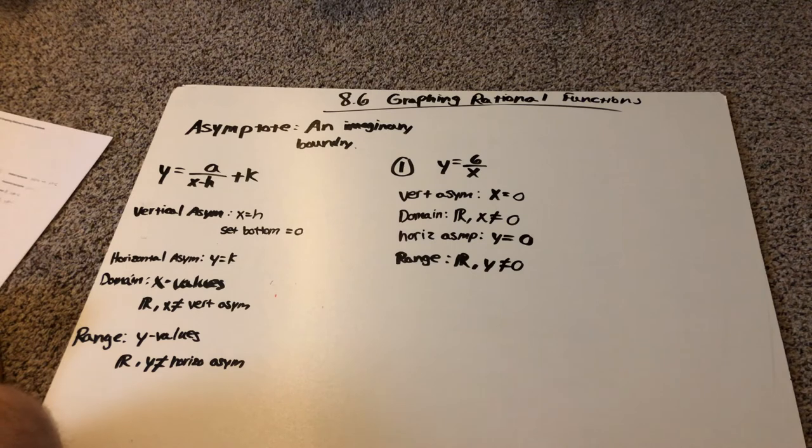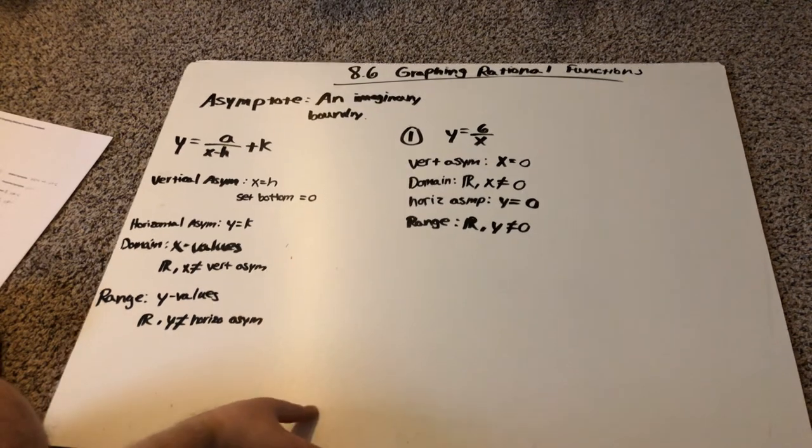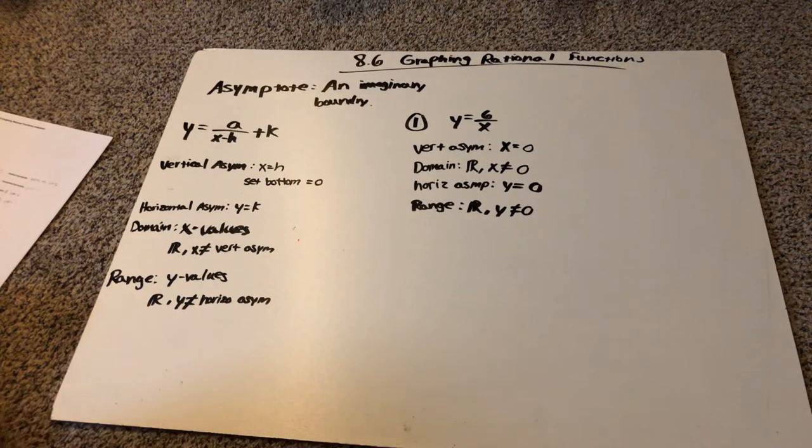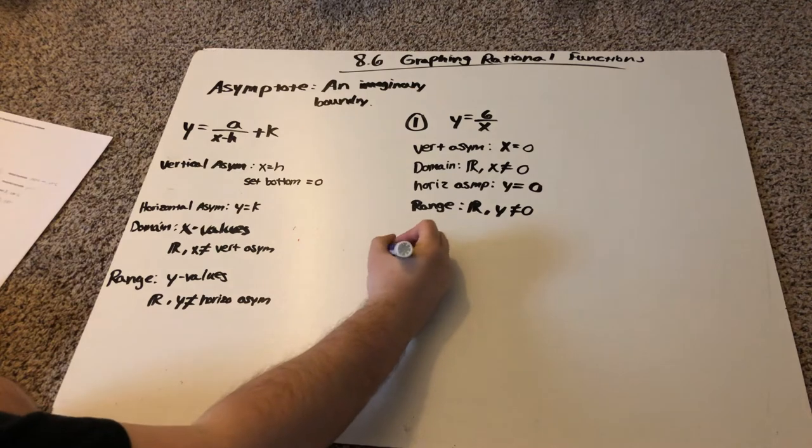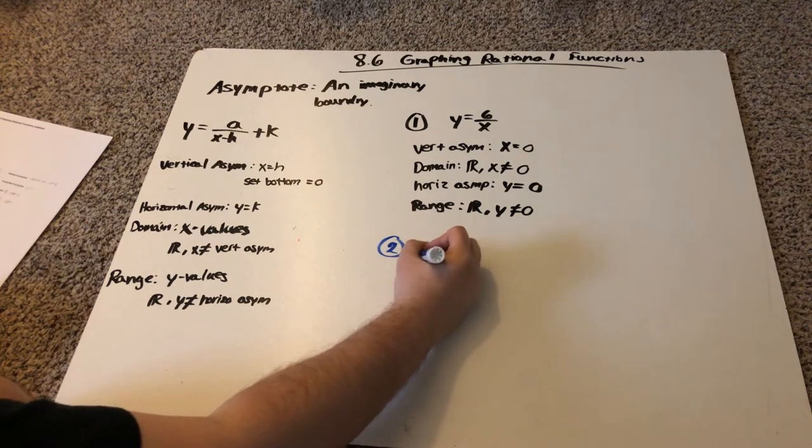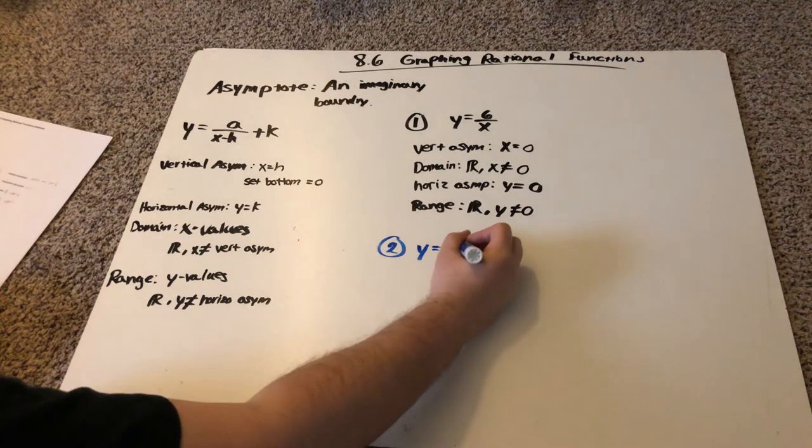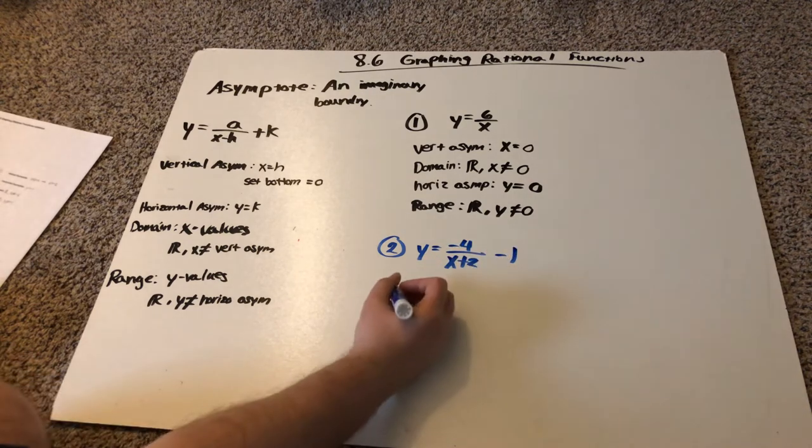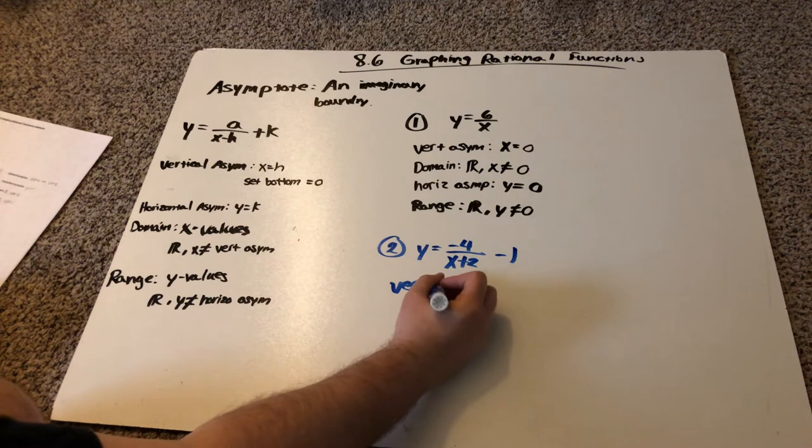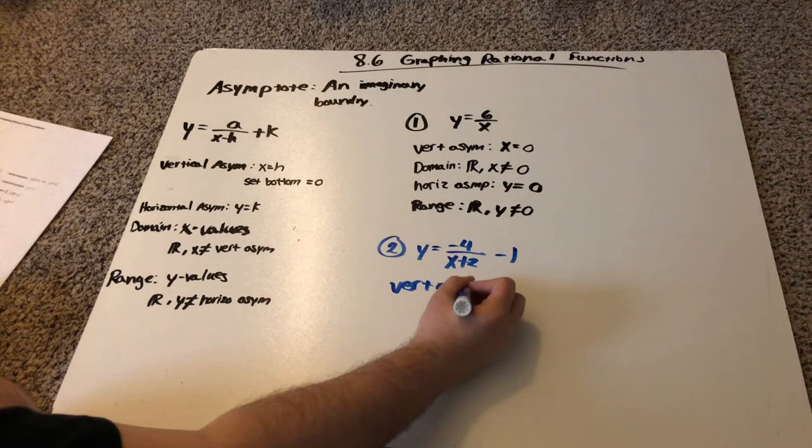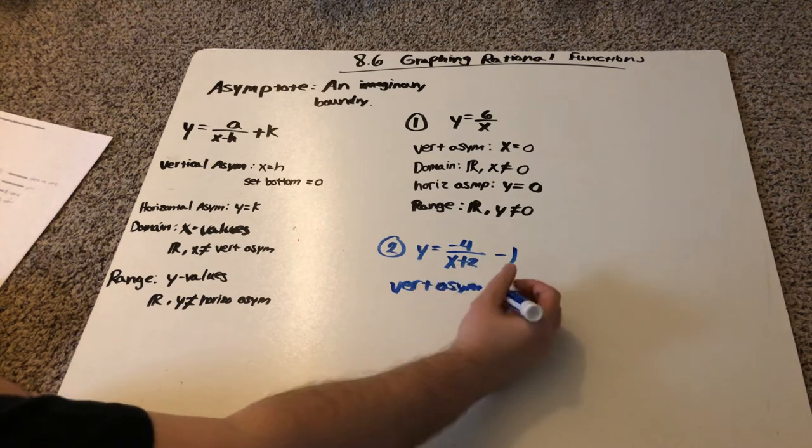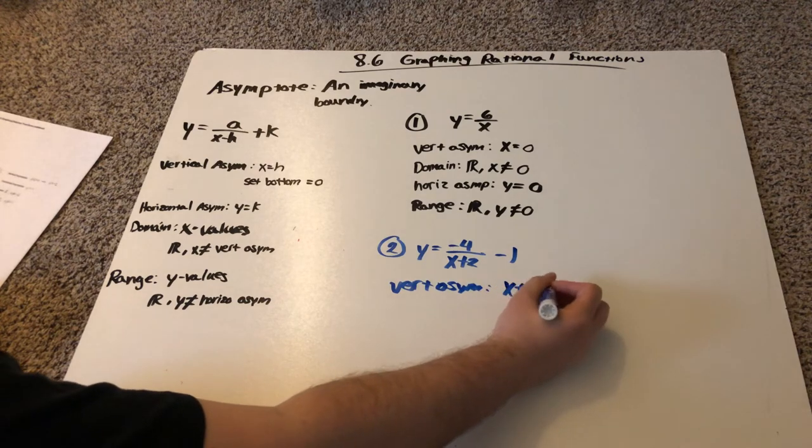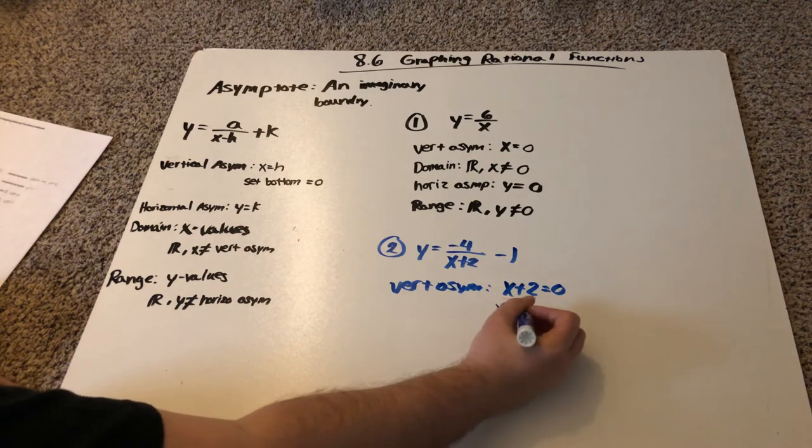For number two, I have y is equal to negative four over x plus two minus one. So for the vertical asymptote, I'm going to set this bottom equal to zero. x plus two equals zero. So I get x is equal to negative two.